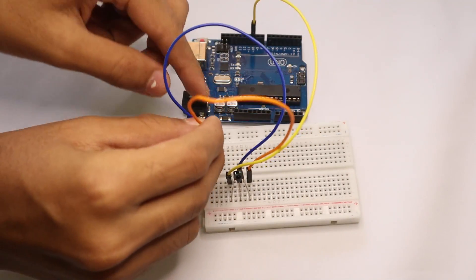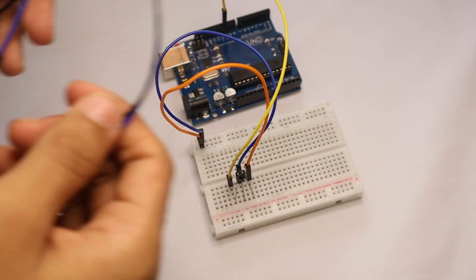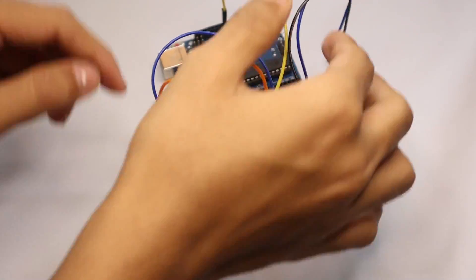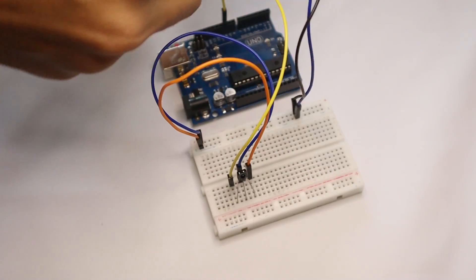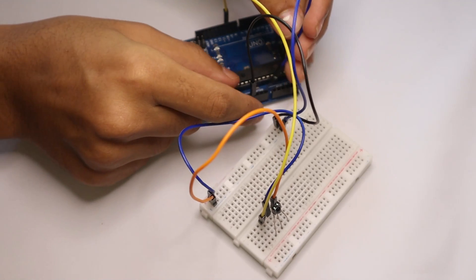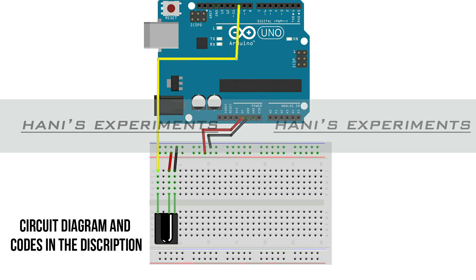Now connect the other two wires to the breadboard. Now connect the positive to 5 volt and negative to ground. So this is the circuit diagram and I'll give you the circuit diagram and the codes in the description below.